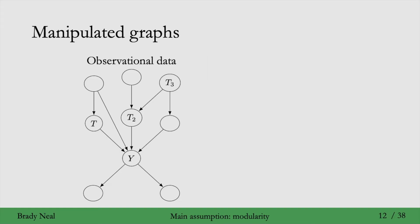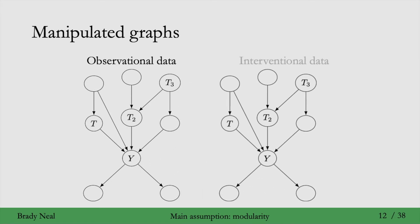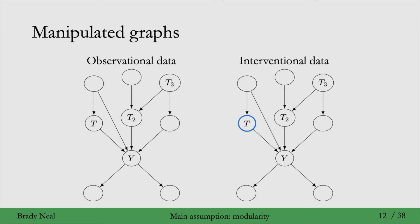To see what I mean by that, we'll consider the graphs of a bunch of different interventional distributions. Say the observational data is generated by this graph. Then if we want to write down the graph for some interventional data, we just duplicate this graph, pick the variable we want to intervene on, and set it to a specific value — so it no longer will have parents in the causal graph. Importantly, the only factor that changes in this interventional distribution is the factor for the variable we intervened on, in this case t. That factor now becomes 1 for values consistent with the intervention and 0 for values inconsistent. The modularity assumption tells us all other factors remain exactly the same. We call this graph — where the edges into the intervened variable t are deleted — the manipulated graph.